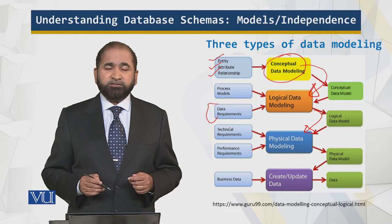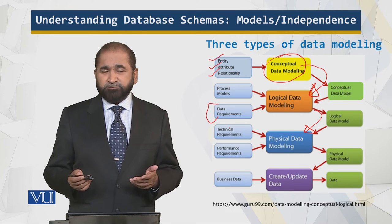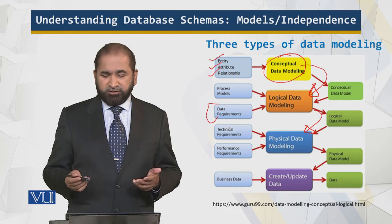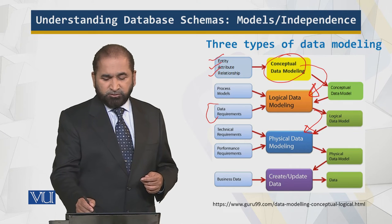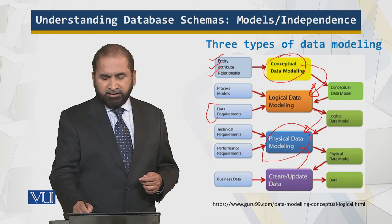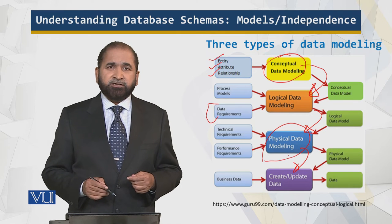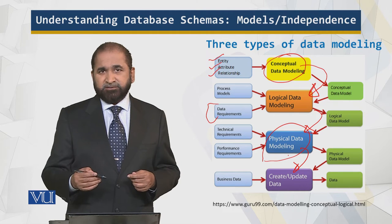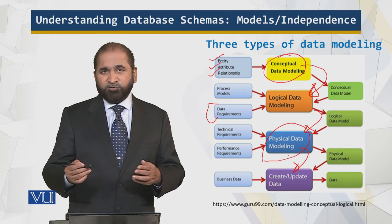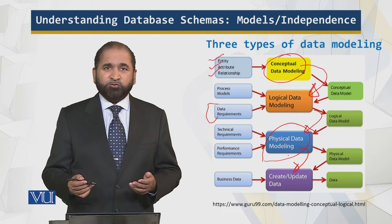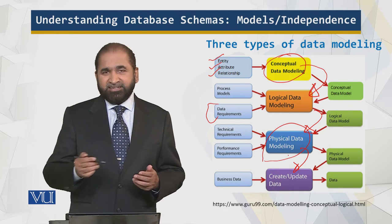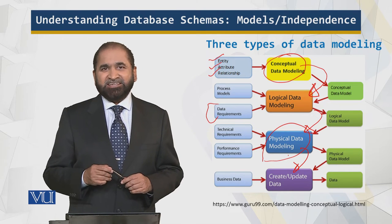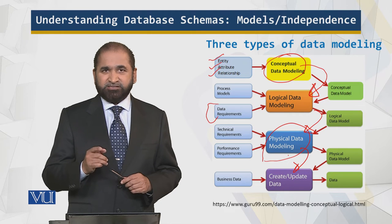In physical modeling, we define the representations of the data — how indexing will be performed, which indexing will be done, the security of the data, and the integrity of the data. These requirements go into the physical data model. Then we have the actual application running, developed based upon these models. It's a process through which additional details are added to make it more comprehensible and useful for the developer, ensuring nothing is missed — because the cost of fixing missed items is tremendous compared to getting it right the first time.